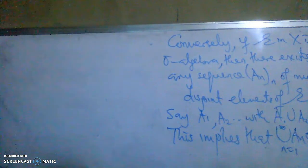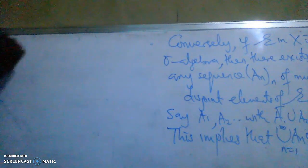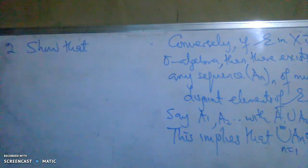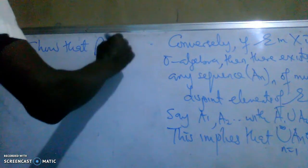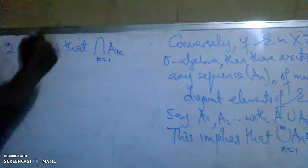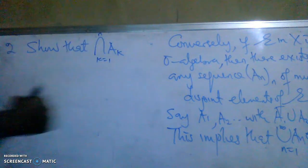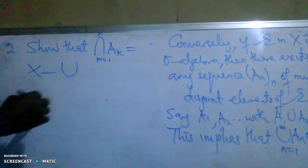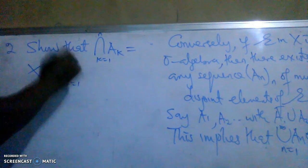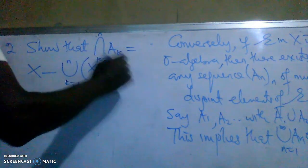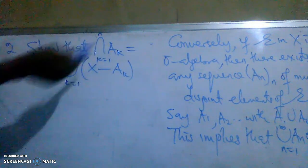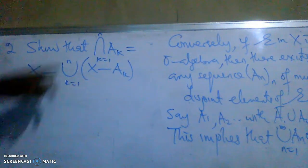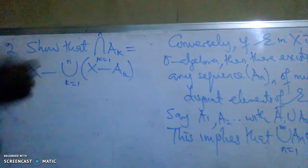The second question: show that the intersection of A_k, as k moves from 1 to n (a finite sequence), is equal to X minus the union, as k moves from 1 to n, of X minus A_k. I want to show that the intersection of the finite sequence A_k equals X minus the union of (X minus A_k). Let's prove this — it's very simple.